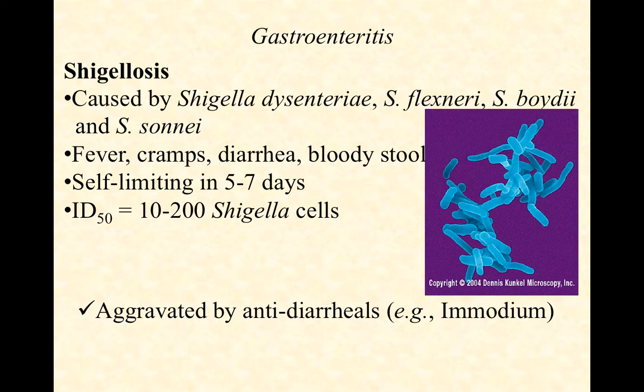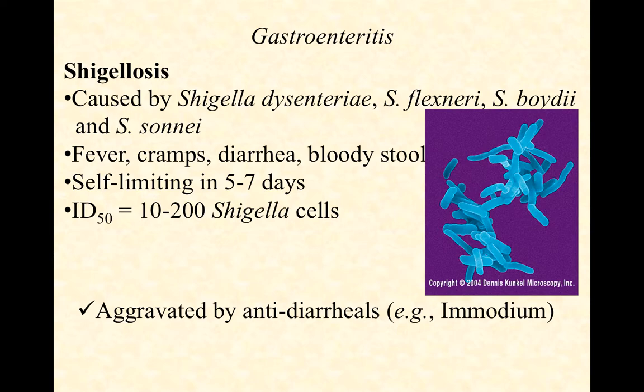Some E. coli strains also use type 3 secretion systems, but it's not unique to these three genera. Shigellosis is a form of gastroenteritis, sometimes called stomach flu — though we're ditching that confusing terminology. There are four known species of Shigella that can cause gastroenteritis: Shigella dysenteriae, Shigella flexnerii, Shigella voidii, and Shigella sonii. Shigella gastroenteritis is often referred to as dysentery or bacillary dysentery. Symptoms include fever, cramps, diarrhea, and bloody stool — typically not a watery stool, which is more often an E. coli infection.